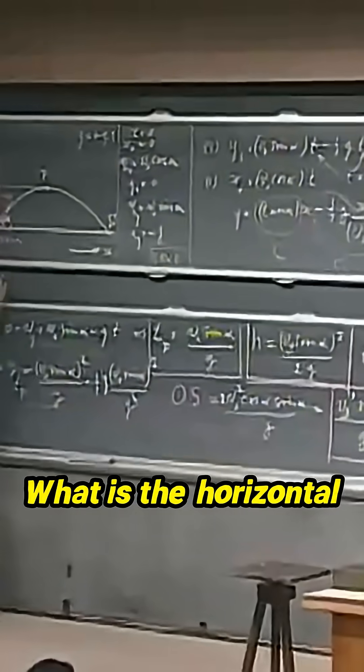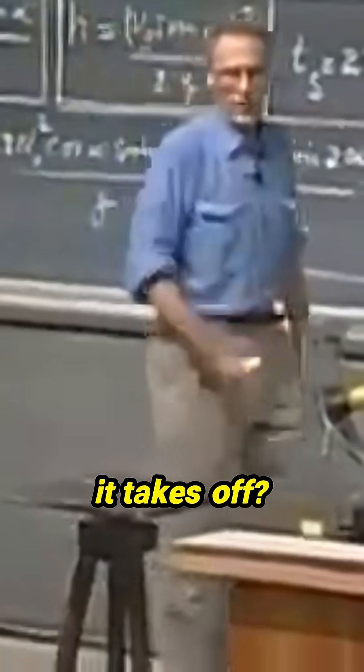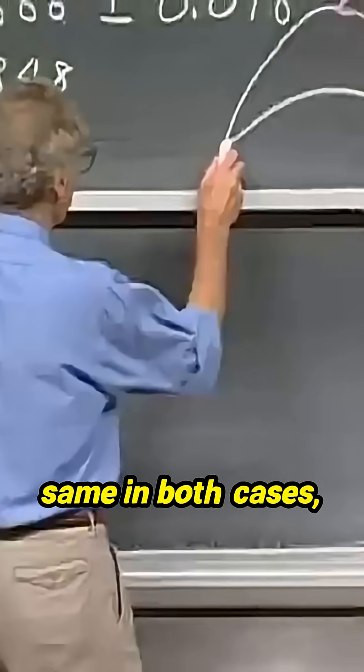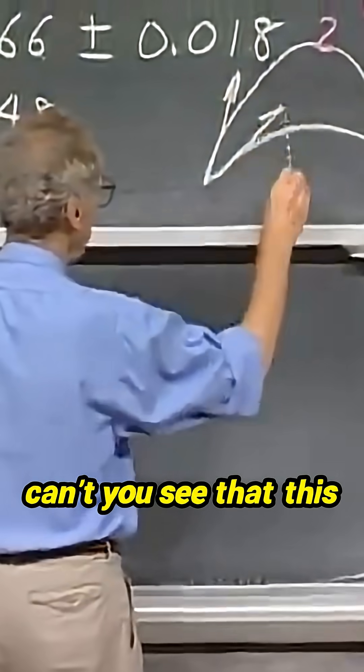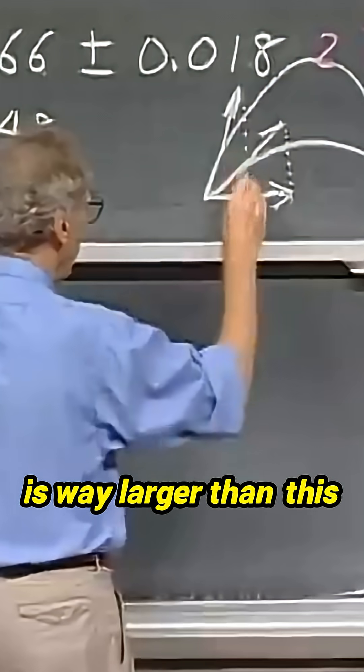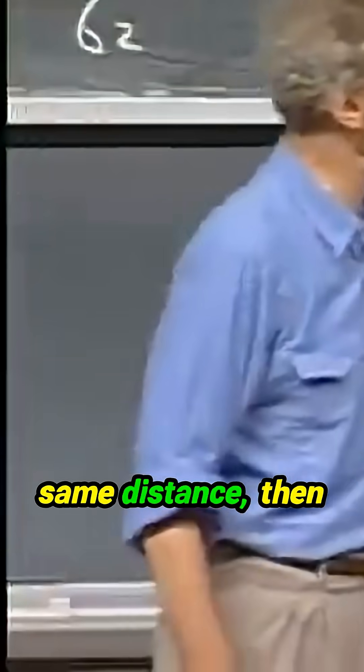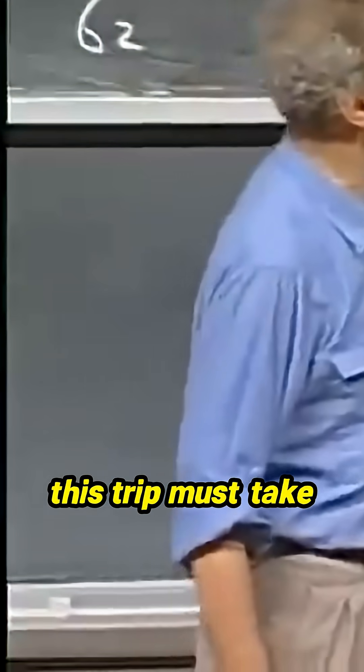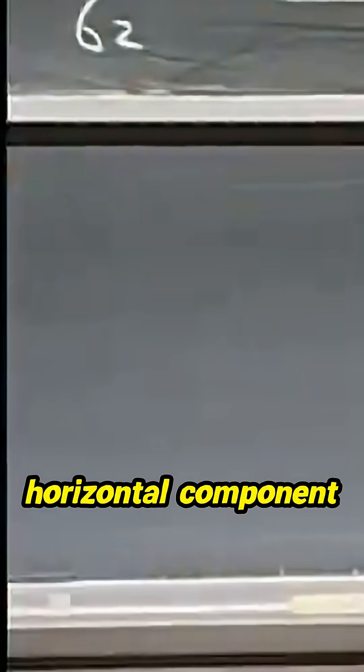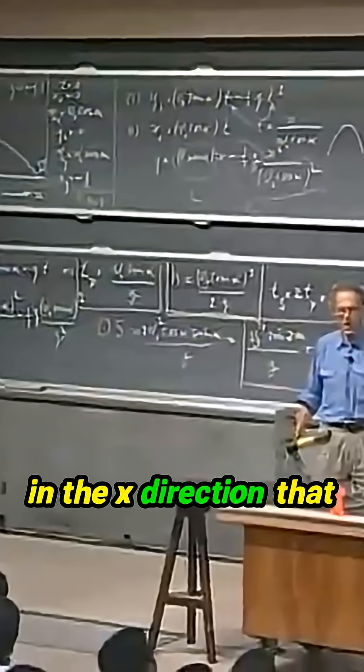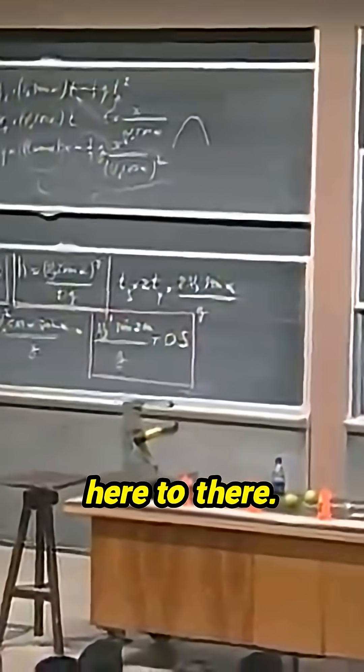What is the horizontal velocity of the golf ball when it takes off? If the velocity is the same in both cases, can't you see that this horizontal component is way larger than this horizontal component? And if they travel the same distance, then this trip must take longer. Because it's the horizontal component in the x-direction that determines how long it will take to go from here to there.